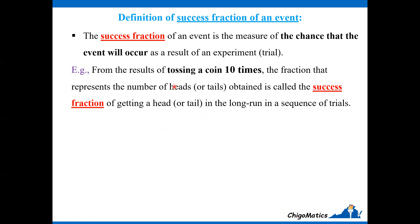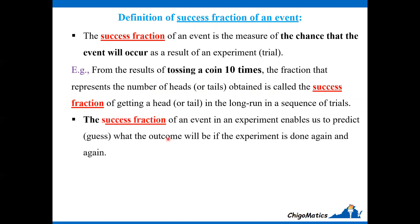The success fraction is what you observe from an experiment, which you then use to predict what could happen if you repeat the experiment. The success fraction of an event therefore enables us to predict or guess what the outcome would be if the experiment is done again and again.